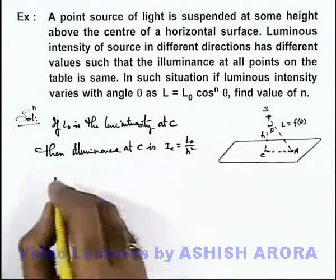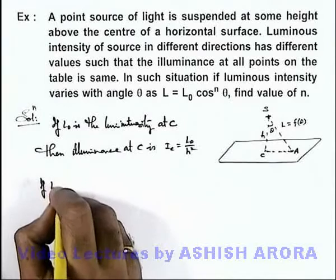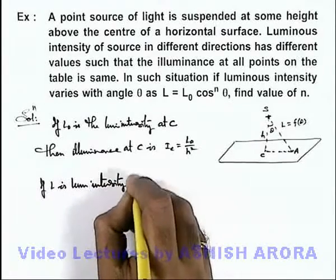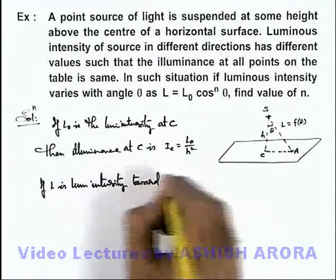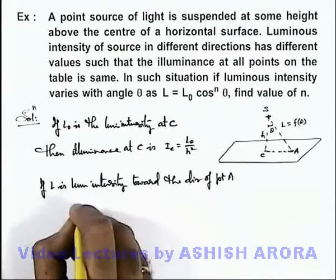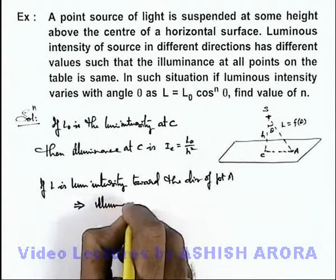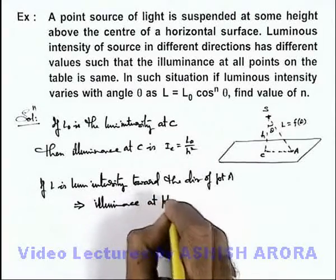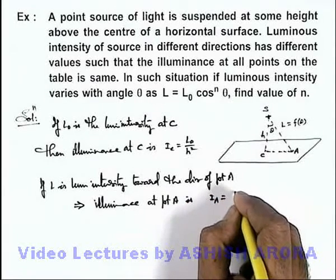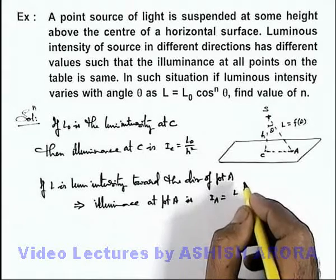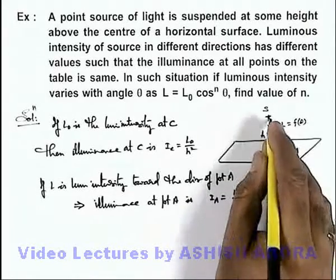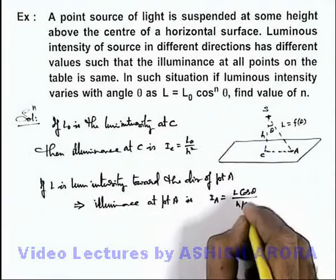IA we can write: if illuminance in this direction is L, here we can write L cos theta divided by the distance square, and this distance we can write as h by cos theta. Now in this situation we are given that IA is equal to IC.